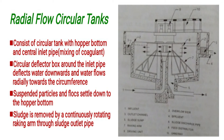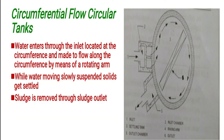Suspended particles and flocs settle down to the hopper bottom. A raking arm continuously rotates, and through the raking arm, the sludge is removed via a sludge outlet pipe. The second type of circular tank is the circumferential flow circular tank.